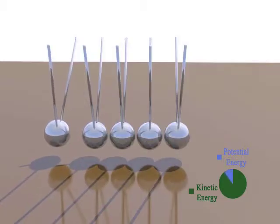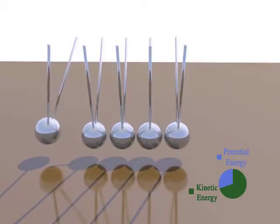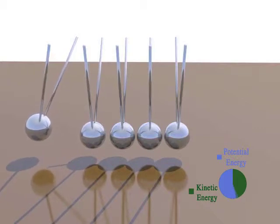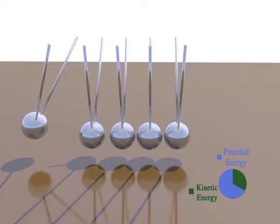The final ball gains the kinetic energy and begins to move at maximum speed. The reverse happens and all of the kinetic energy is gradually converted to potential energy.